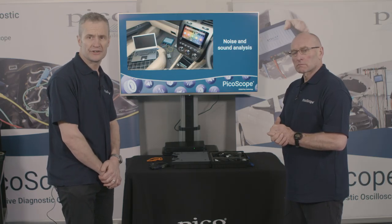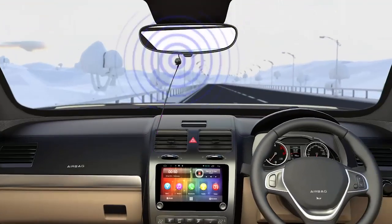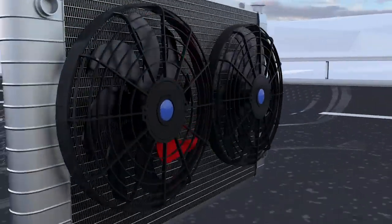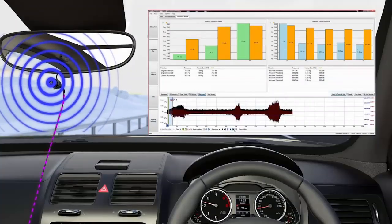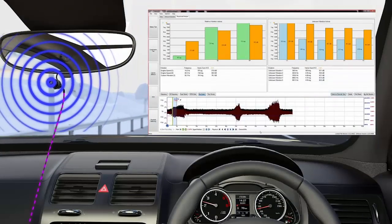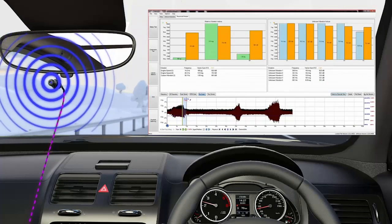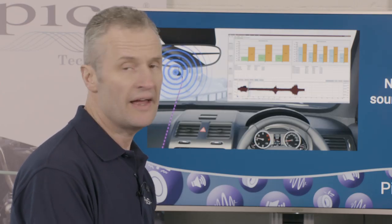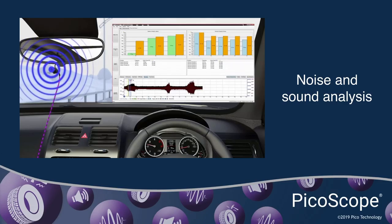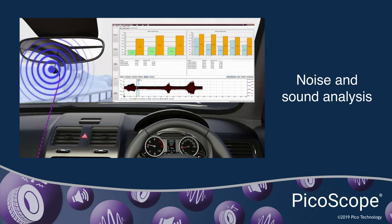So let's have a look at this animation. Here we're adding the microphone to channel D. There we have the issue — this was a damaged cooling fan — and here we're displaying the noise in bar graph view. You can see the intense vibration that comes on when the cooling fan comes on at top speed, and on the right-hand side you'll see the top five unknown vibrations. That's unknown because it's not linked to engine or road speed — it's an electric cooling fan.